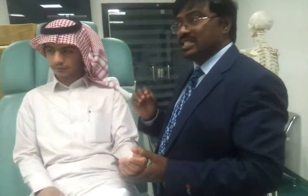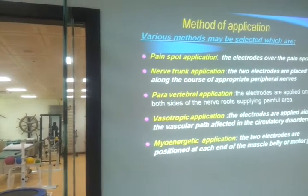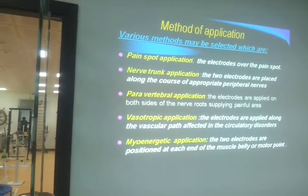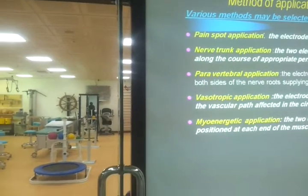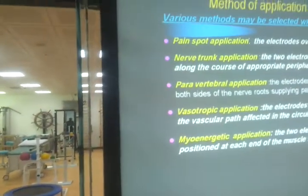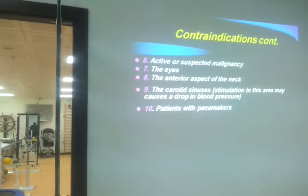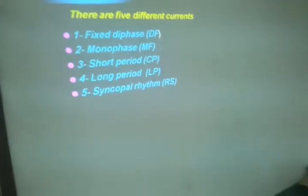Depending upon which nerve is involved, you have to choose the placement of the electrodes. Now the patient is saying: I am having neck pain coming to my thumb. So what kind of current do I have to choose? Nerve trunk application. But what kind of diadynamic current? You have to select long phase to treat the neuralgia kind of pain.